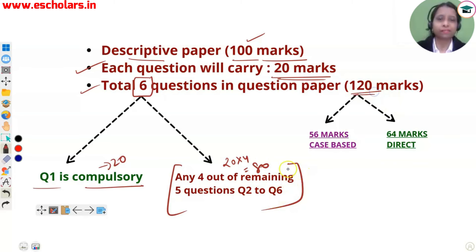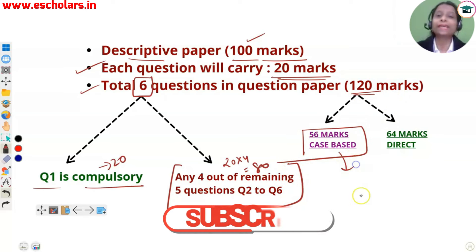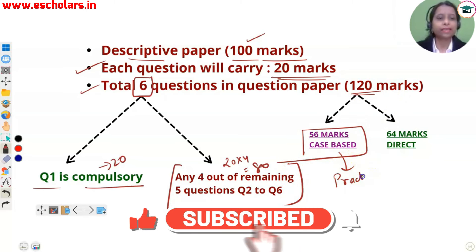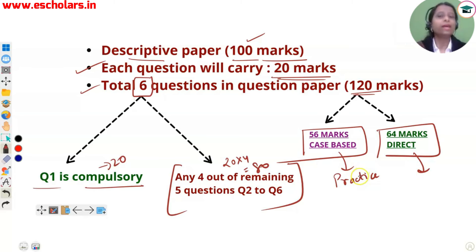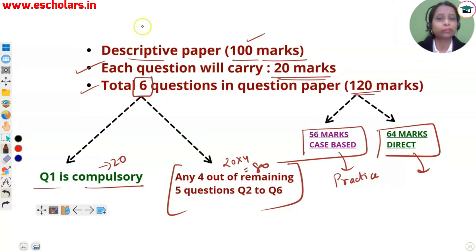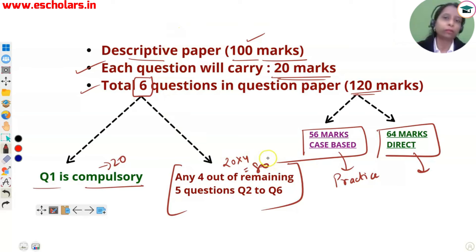Now, out of the total 120 marks, 56 marks will be case-based or practical questions — a case scenario will be given and you will have to answer it. The remaining 64 marks will be direct questions. I will also tell you which chapter will have direct questions and which will have case-based questions. Note that this information is not yet available on ICAI's official website, but we have a reliable source from ICAI, so you can trust this video.